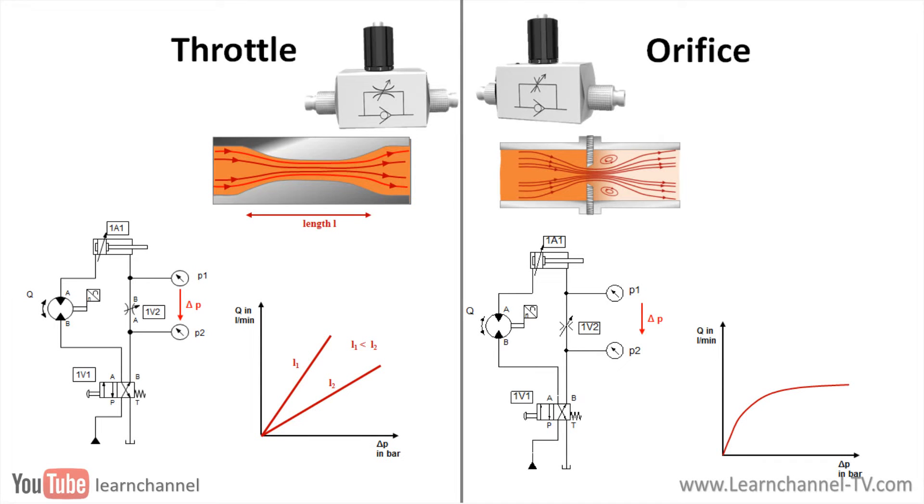The graph below shows a comparison of the volume flow between a throttle and an orifice as a function of the pressure difference. As you can see, the volume flow at an ideal throttle with a soft transition from thicker to thinner diameter increases roughly proportional to the pressure, provided that the flow is maintained as laminar.